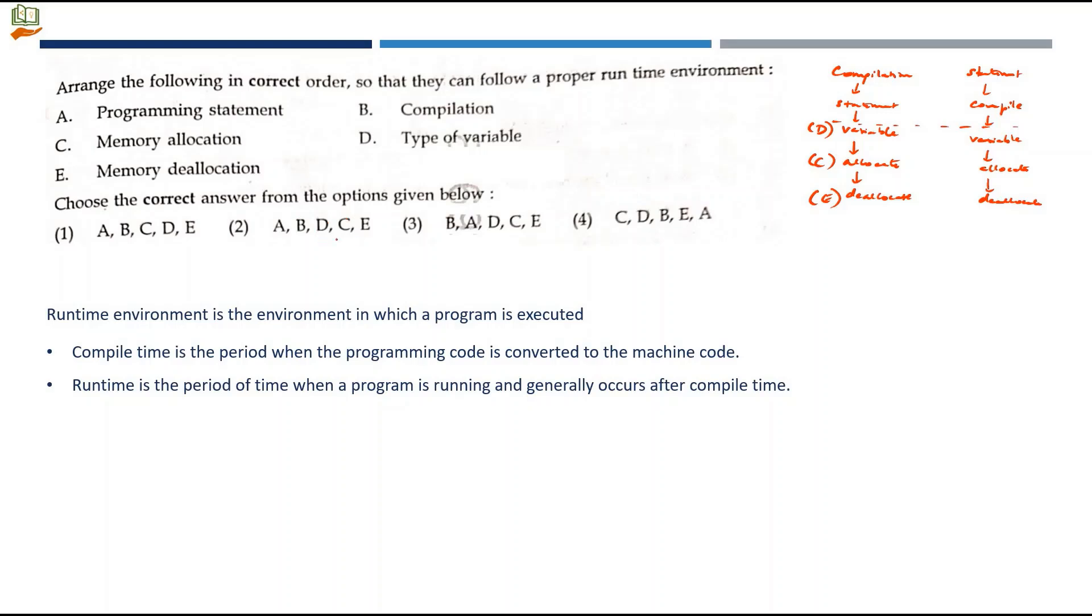Type of variable is option D, memory allocation is option C, and memory deallocation is option E. Whichever has D, C, E can be considered. The question is whether it's compilation and programming statement or programming statement and compilation. Since they use the term proper runtime environment, runtime is when the program is running. I will consider this to be pressing the run key. When I press run, compiled languages will compile the program, then interpret the statement, pick type of variable, memory allocation and deallocation.